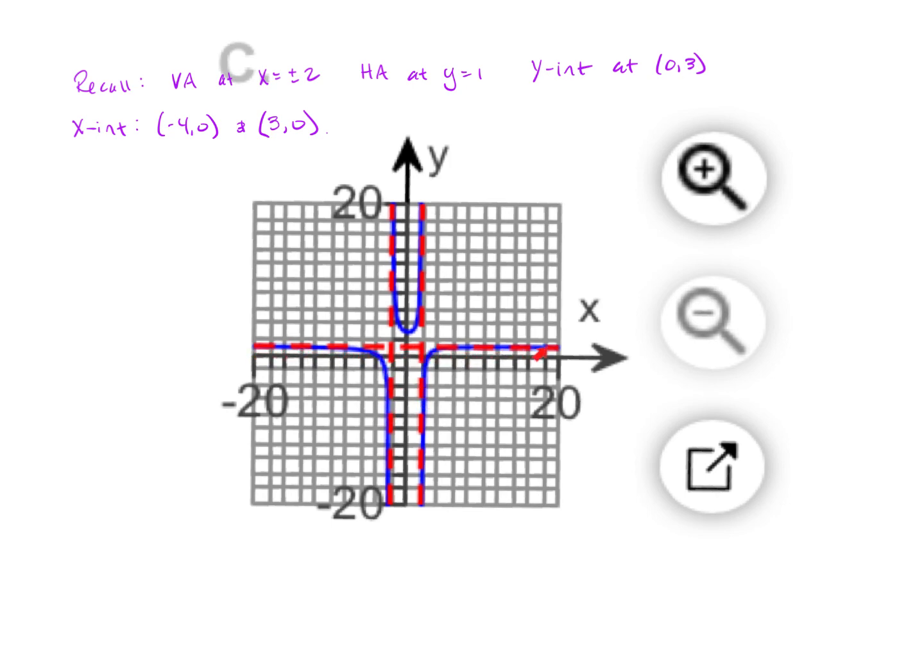This horizontal asymptote is halfway between 0 and the first tick mark, which would be at 1 because the tick marks are 2 apart. We have the vertical and horizontal asymptotes in the right place. I have a y-intercept at 3, x-intercepts at negative 4 and 3.